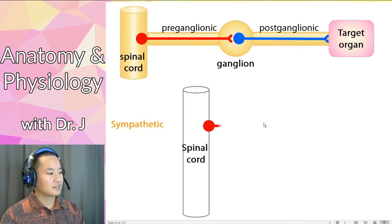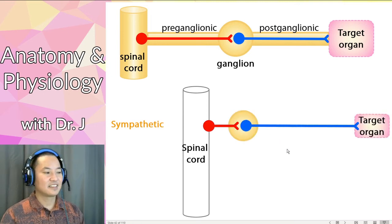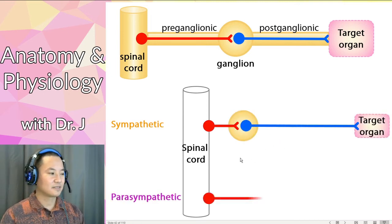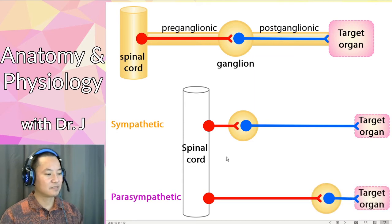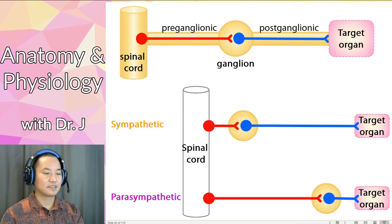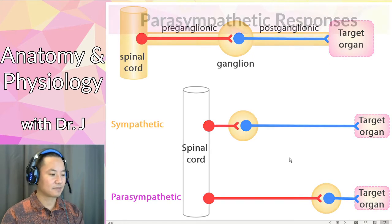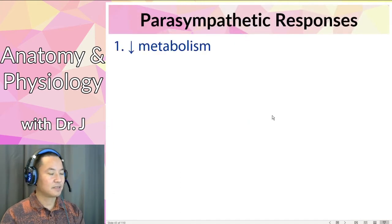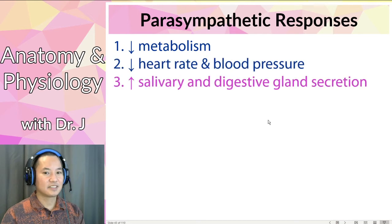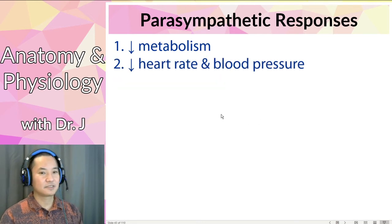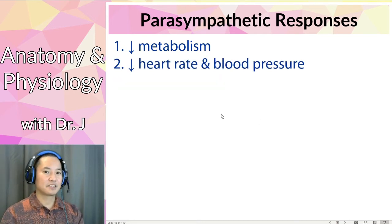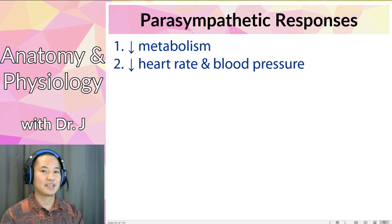In the sympathetic nervous system: short preganglionic, ganglion, then long postganglionic. In the parasympathetic nervous system, it's the inverse: long preganglionic fibers and a relatively short postganglionic fiber. The parasympathetic responses are essentially the inverse of the sympathetic responses — it acts like the brakes on your metabolism, heart rate, blood pressure, and breathing.